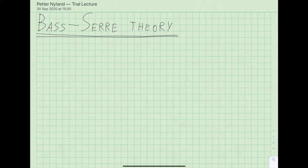As mentioned, the two fundamental mathematical concepts in Bass-Serre theory are group actions on trees on the one hand, and graphs of groups on the other hand. We'll begin with what is hopefully the most familiar, namely groups acting on trees.